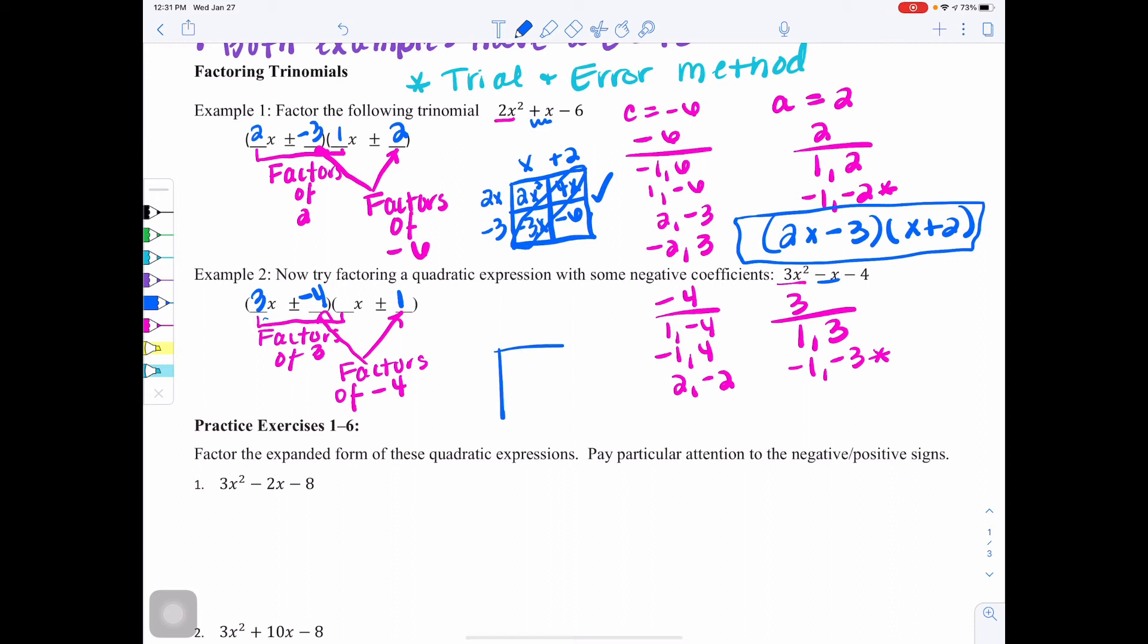So we can check this out by doing our boxes, making sure we have the right combination. We've got 3x minus 4 and x plus 1. So I would get 3x squared plus 3x minus 4x and minus 4. So if I were to combine my like terms, I'd have 3x squared minus x minus 4, which does check. So now I know my final answer is 3x minus 4 times x plus 1.